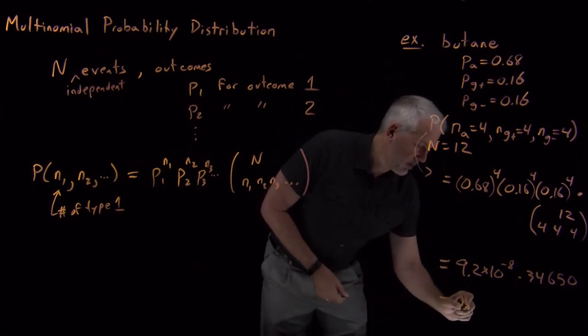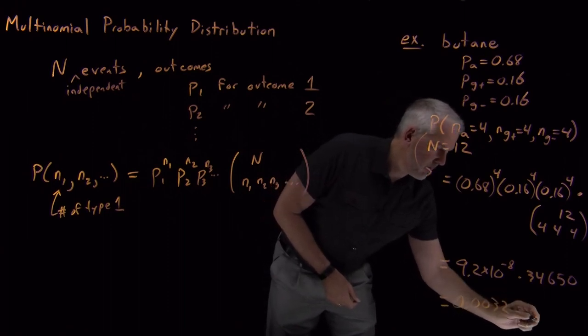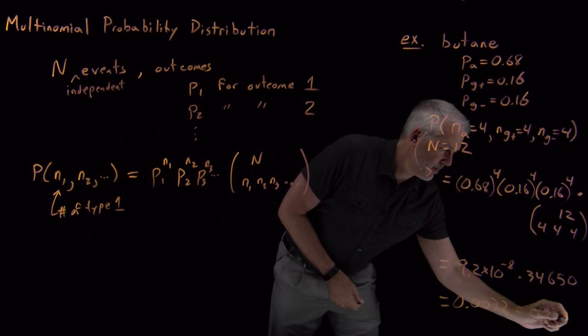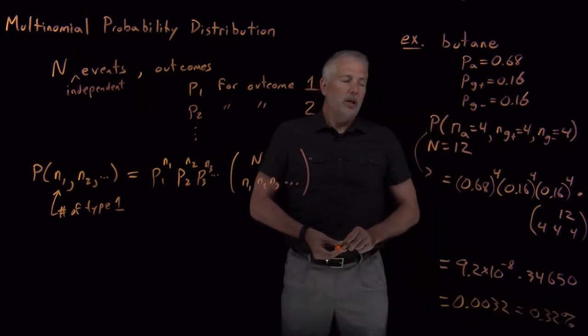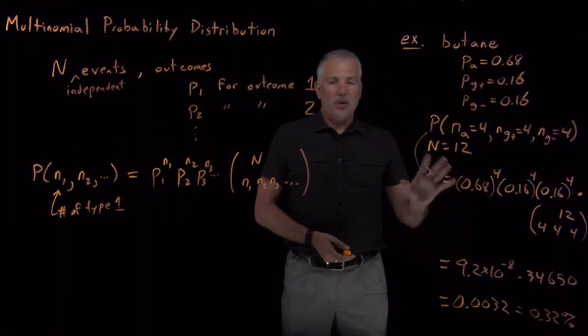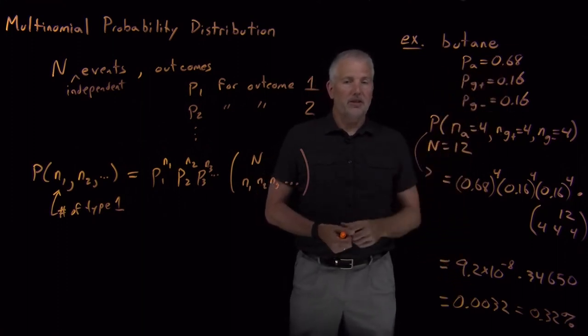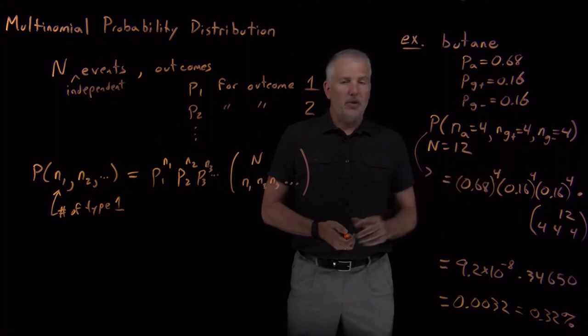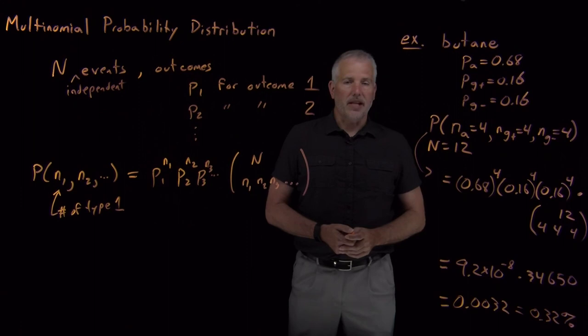When we combine those two things, the net result is 0.0032. So the numerical answer to the question, what is the probability if I have 12 butane molecules under these conditions, that an equal number of them are in each of the three different states? There's only about a 0.3% chance that that's going to happen.